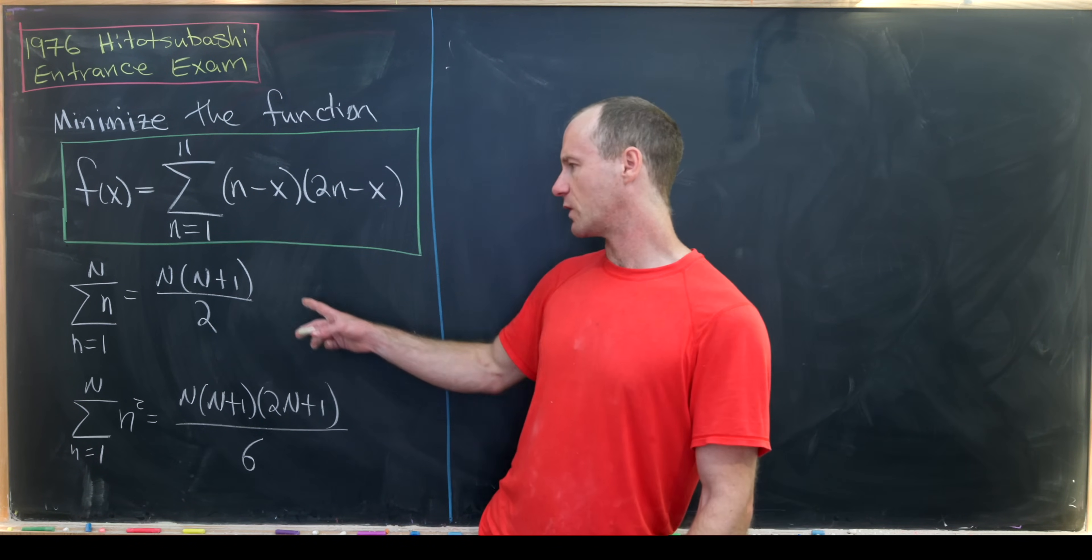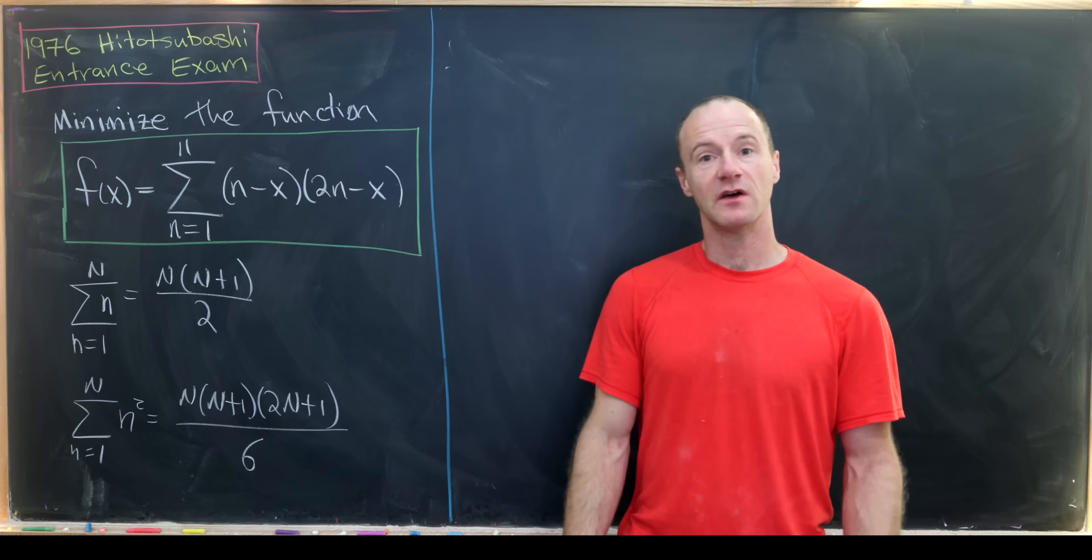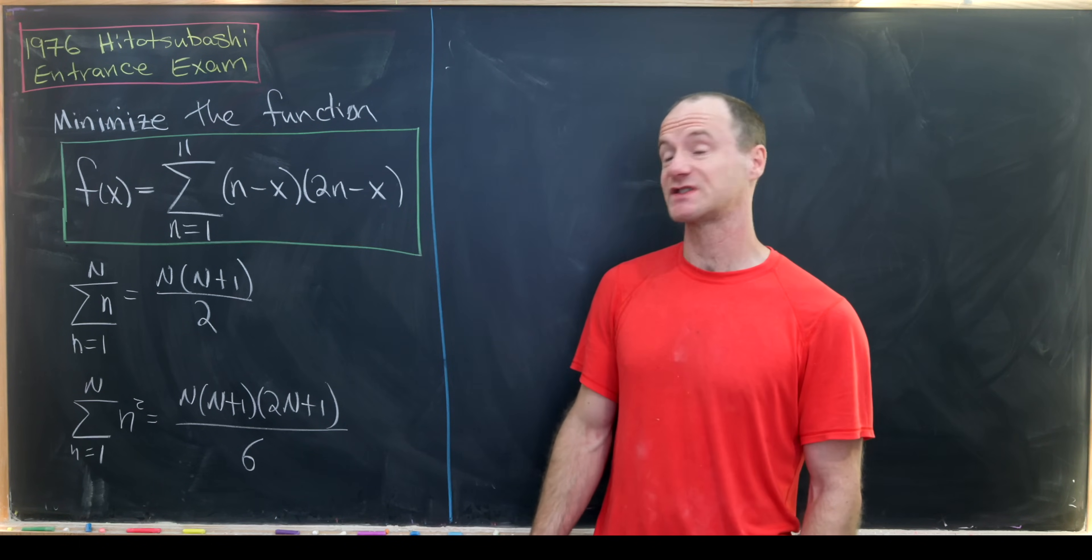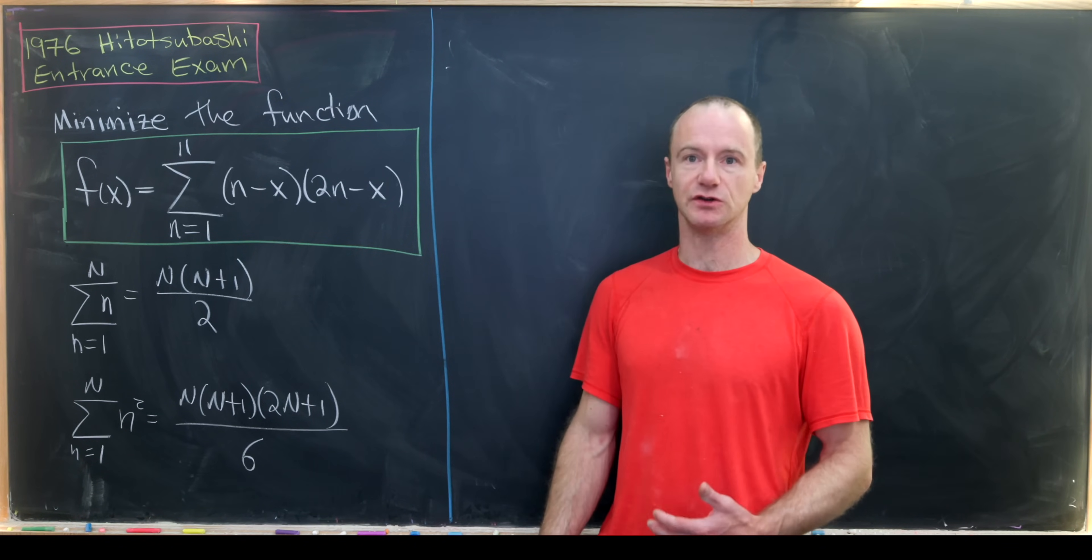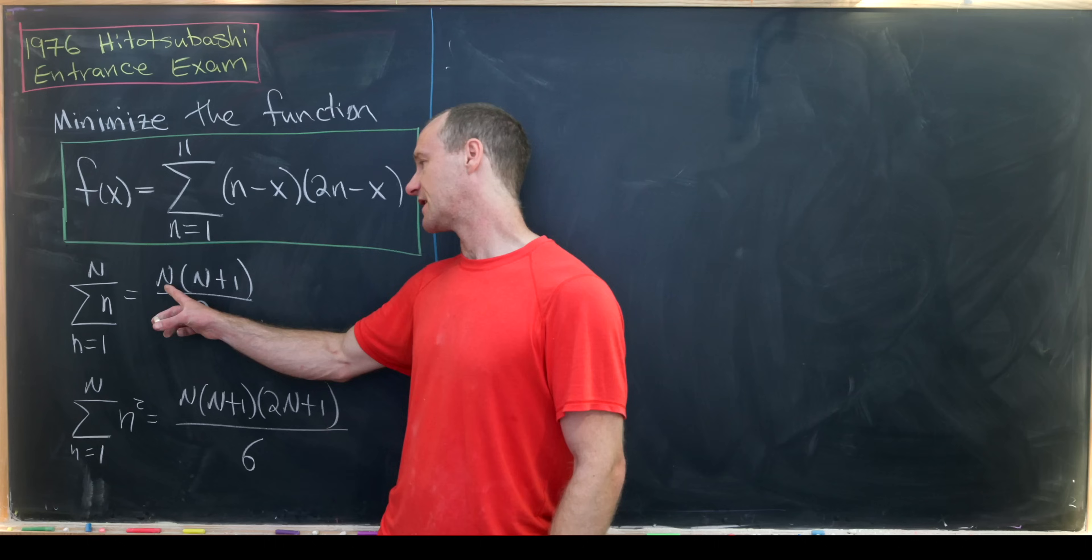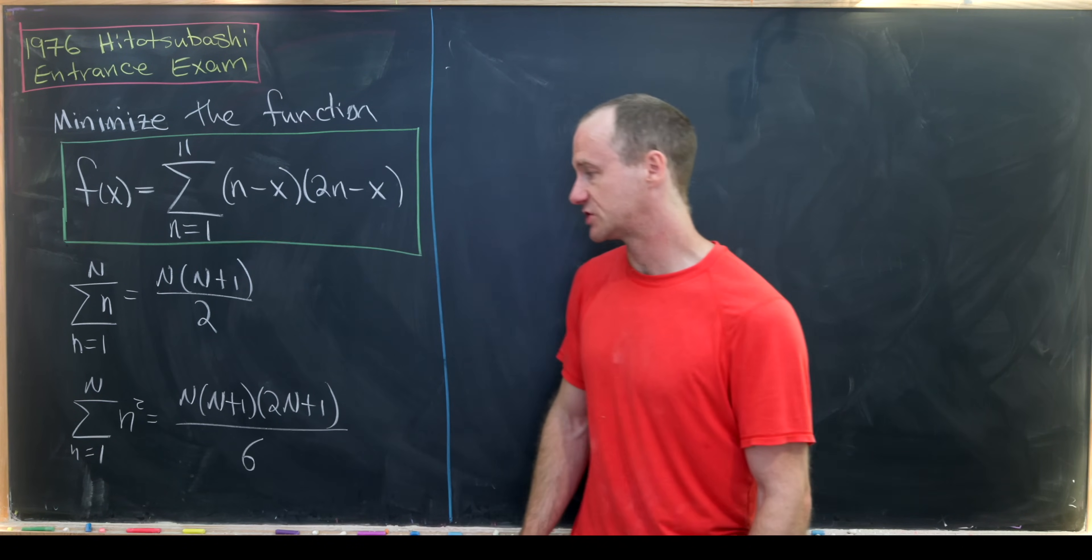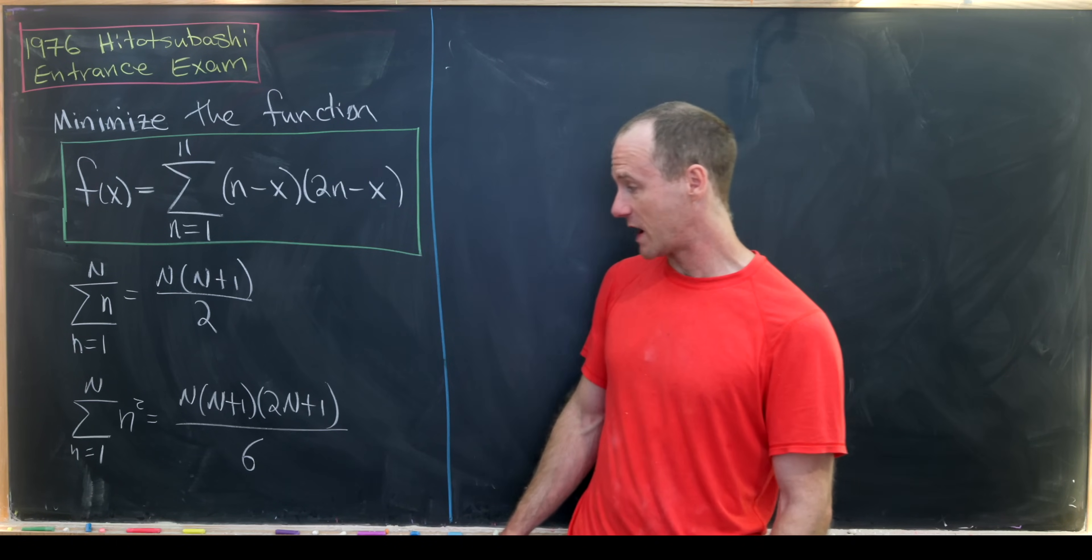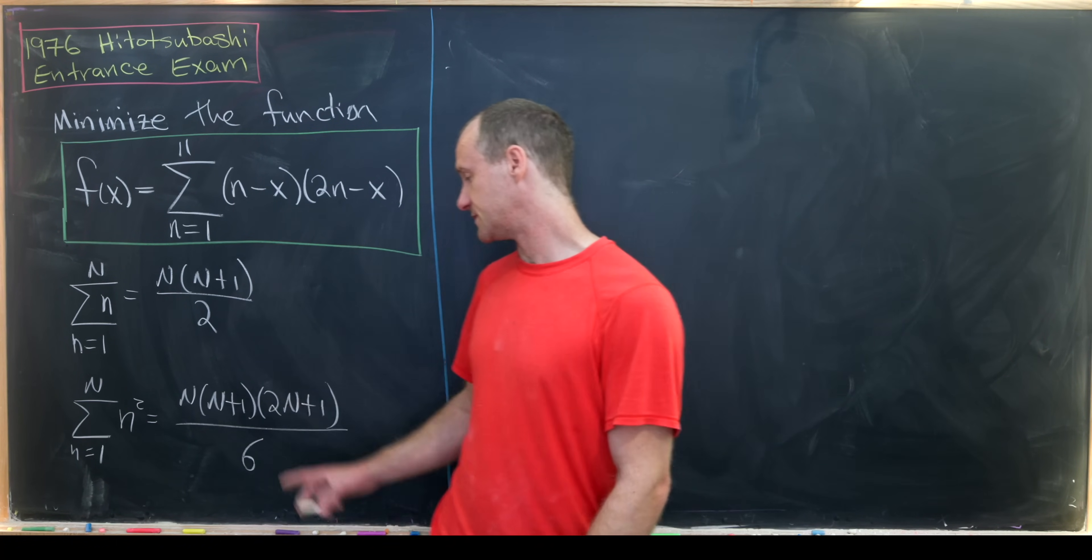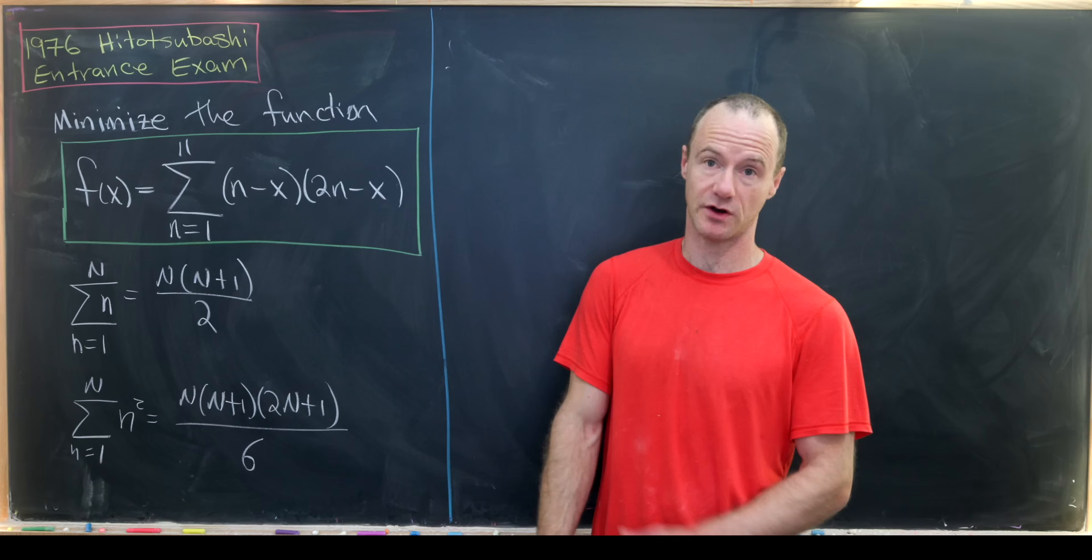We'll make use of the following well-known formulas. The first one is the sum of the first n positive integers, which gives us n(n+1)/2. And then we've got the sum of the first n squares which gives us n(n+1)(2n+1)/6.